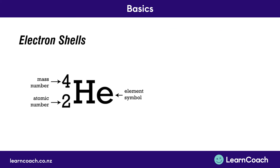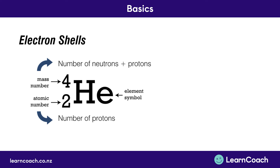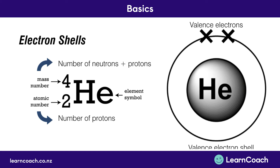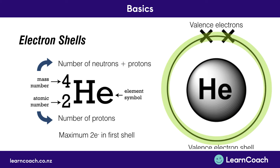Now we'll look at helium. Helium has a mass number of four, which is the number of neutrons and protons, and the atomic number is two, which is the number of protons. Since helium doesn't have a net charge, we know that helium must also have two electrons, which you can see at the top — these are our valence electrons. We also said the maximum number of electrons in the first shell was two, so helium is fully stable because its outer valence energy shell is full.